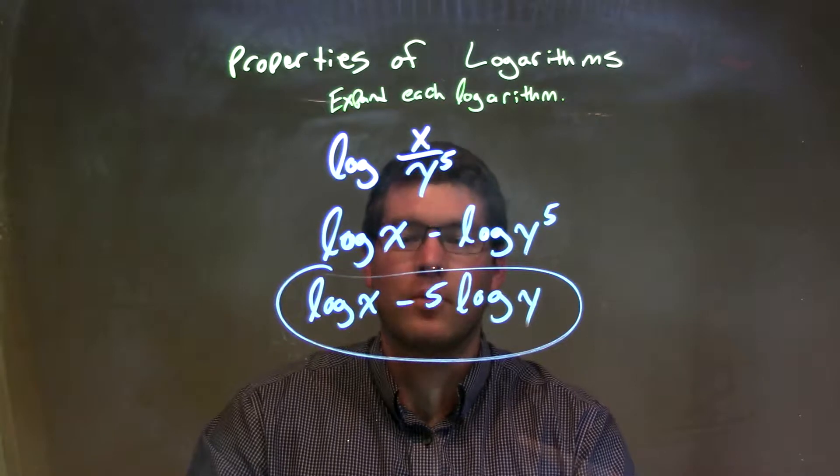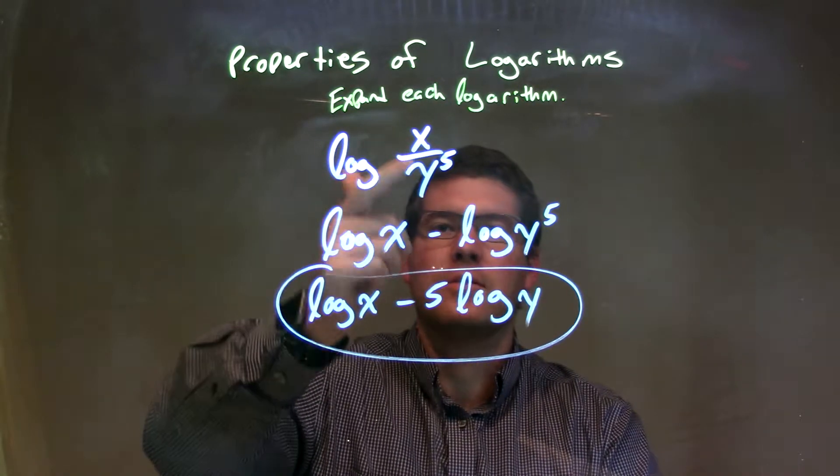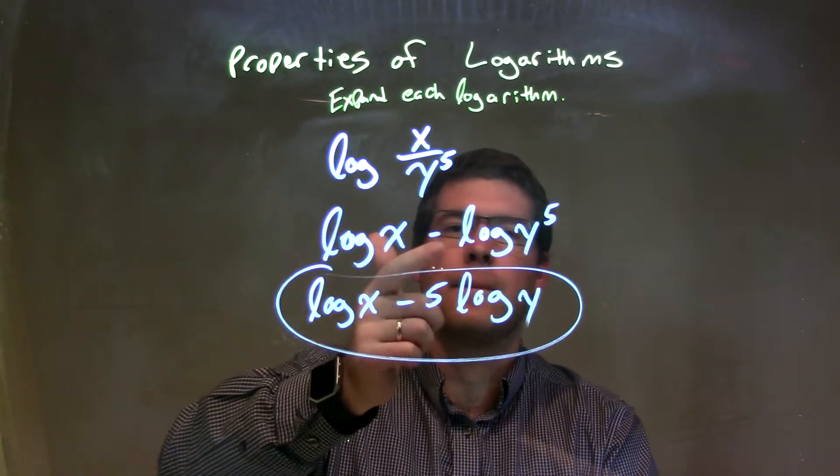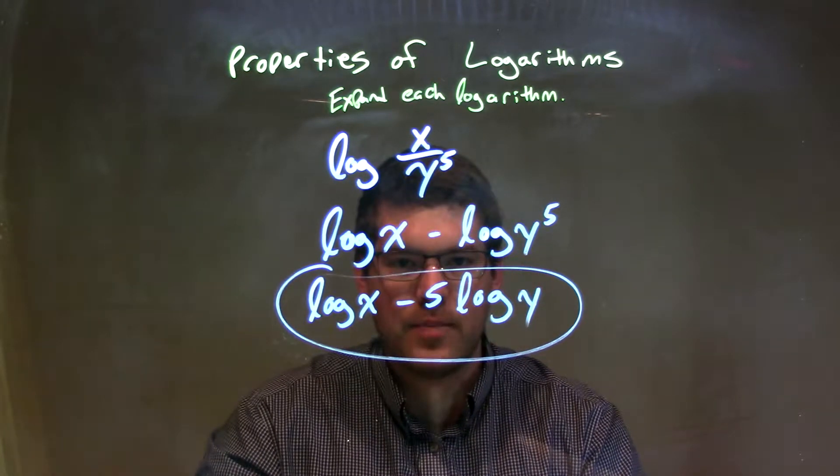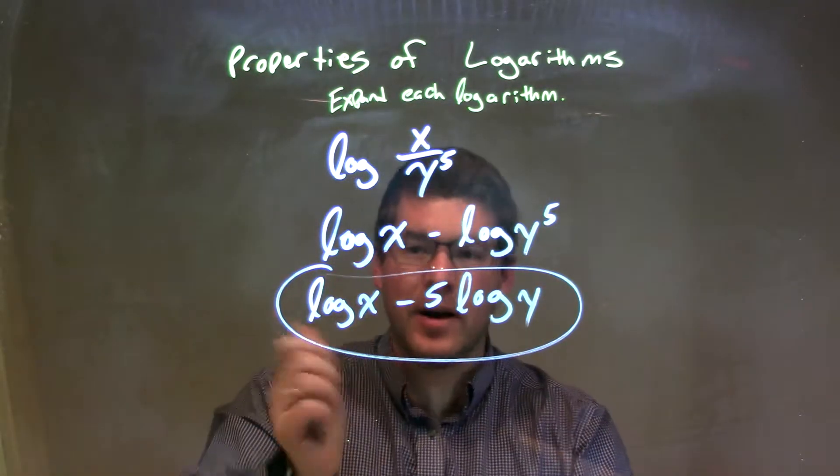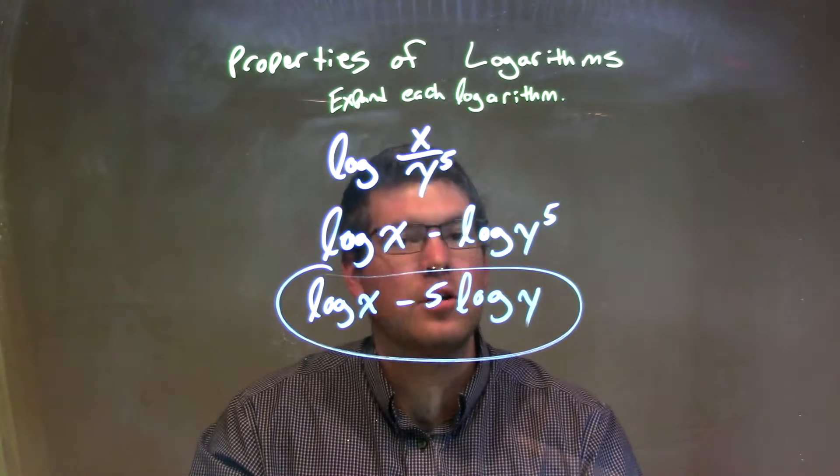We're given log of x over y to the fifth power. From there, that division between x and y to the fifth, I can rewrite to be expanded as log of x minus log of y to the fifth power. Then, that exponent, that fifth power, can come out front, giving me my final answer: log of x minus 5 log of y.